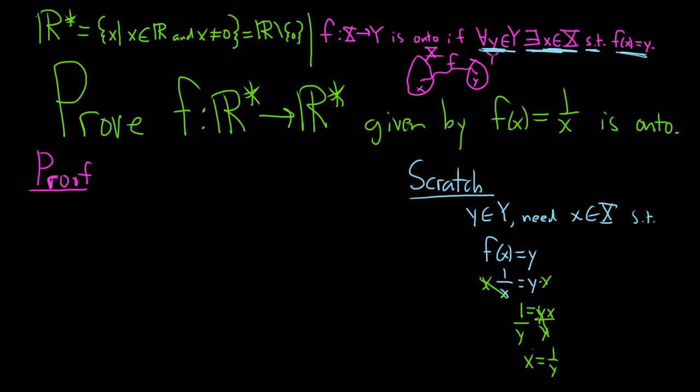All right, so let's go ahead and write the proof. So to do the proof, we'll start by taking a y in our capital Y. So this is our capital Y, and this is our capital X. So we'll start by saying, take any y in capital Y, which is R star. So now we have to produce x.